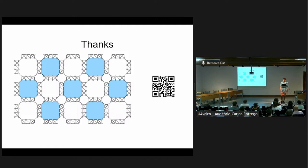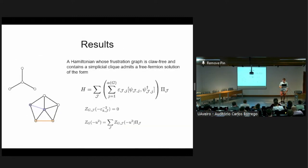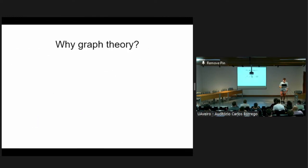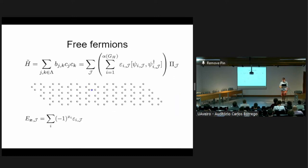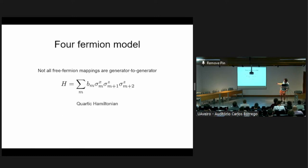Q: Can you reiterate what you meant by generator-to-generator mappings? A: When I say generator-to-generator, I mean each term in the spin sum goes directly to a term in the fermionic sum. The four-fermion model is an instance where if you map each Pauli string to an individual product of fermionic strings via Jordan-Wigner, it won't work — the fermionic strings will be quartic at least. The mapping that does work is highly non-linear.